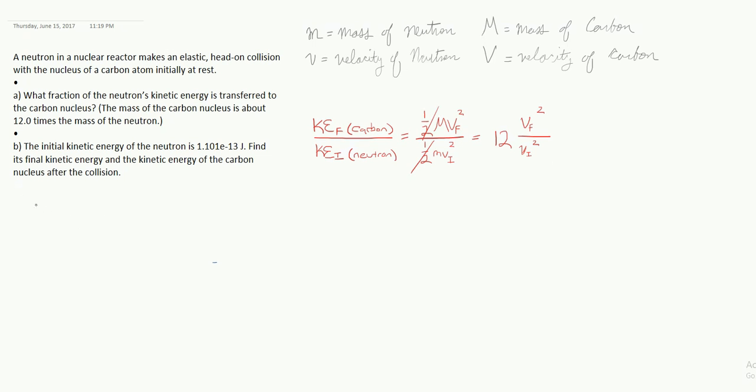Okay, so now what? Well, it's a collision problem, so we might as well start with our conservation of momentum. So we have an expression here. The little m little v initial plus zero because the initial momentum of the carbon atom is zero is going to be equal to little m little v final plus capital M capital V final.